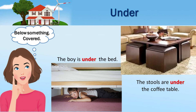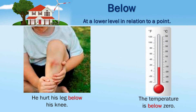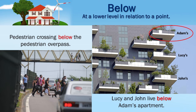Under: the boy is under the bed. The stools are under the coffee table. The woman is under the umbrella. They stored their shoes under the bed. Below — at a lower level in relation to a point: the temperature is below zero. Pedestrian crossing below the pedestrian overpass. Lucy and John live below Adam's apartment.